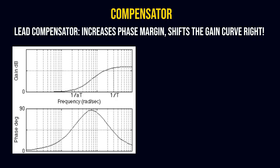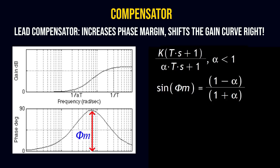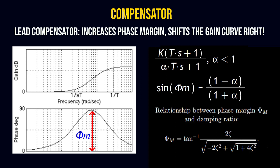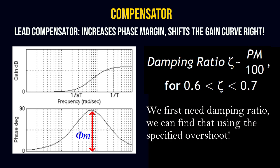For this controller we will use a lead compensator. The goal is to shift the gain curve to the right while adding phase. The compensator notation is: K multiplied by (Ts + 1) divided by (αTs + 1), where α is less than 1. The maximum phase is given by: sin(φ_m) = (1 − α) / (1 + α). There is also a relationship between phase margin and damping ratio using an arctangent function. For damping ratios of 0.6 to 0.7, we can approximate the damping ratio as phase margin divided by 100.